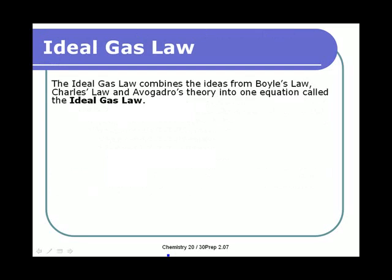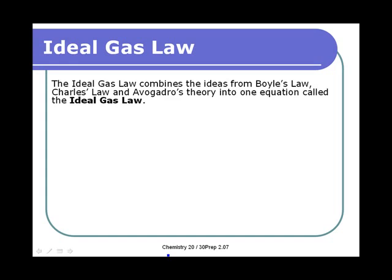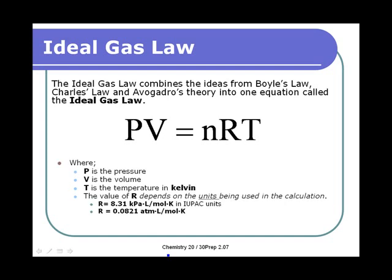The ideal gas law combines Boyle's Law, Charles' Law, and Avogadro's theory — in terms of the number of molecules being related to volume — into the ideal gas law: PV = nRT. I remember it by saying 'Puvnert.' P is pressure, V is volume, T is temperature in Kelvin, and R is a constant.